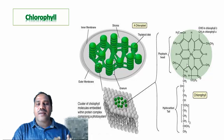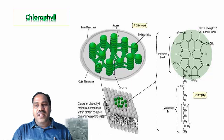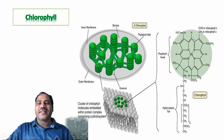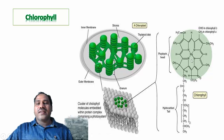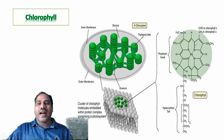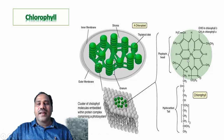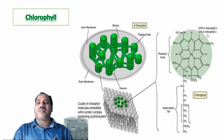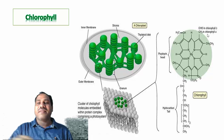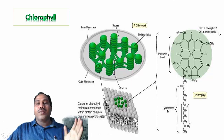Chlorophyll molecules consist of two parts: one is called the porphyrin head and the other is a hydrocarbon tail, also known as the phytol tail. The porphyrin head contains a magnesium ion at the center, coordinated by four nitrogen atoms, and there is a hydrocarbon tail otherwise known as the phytol structure.